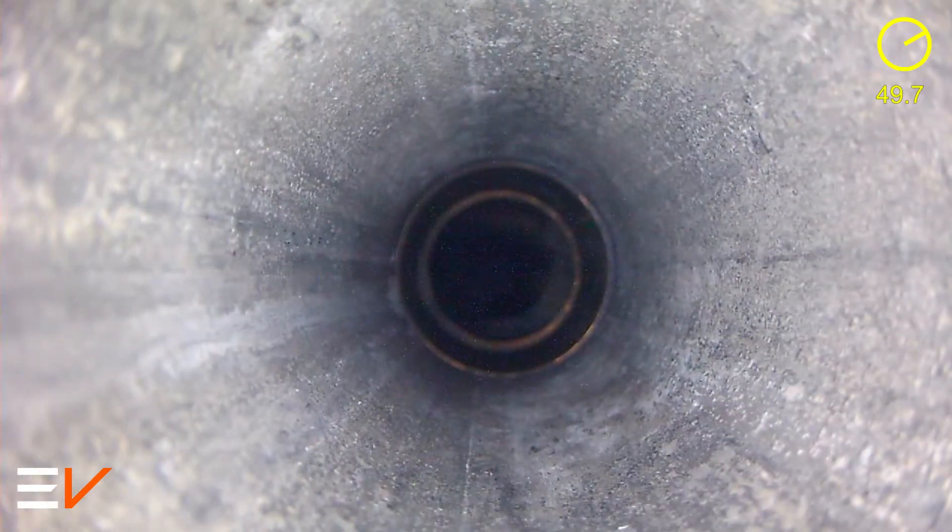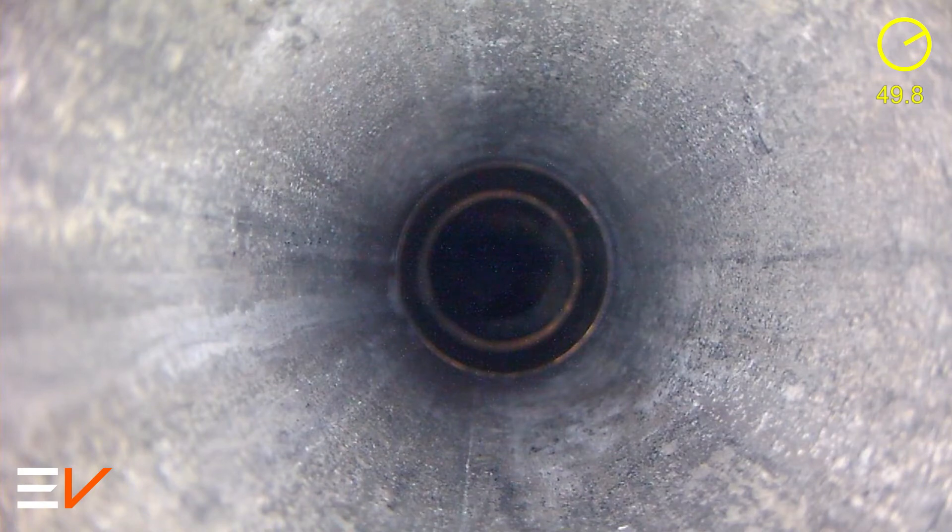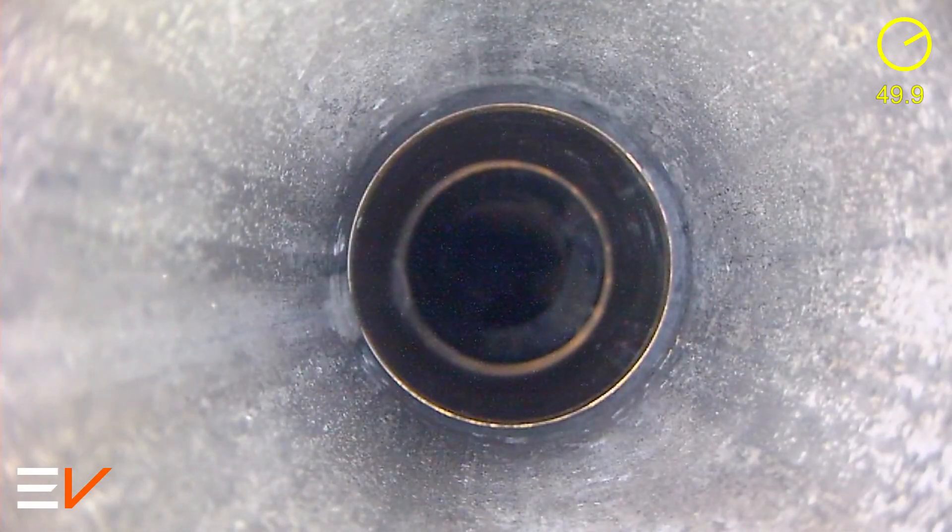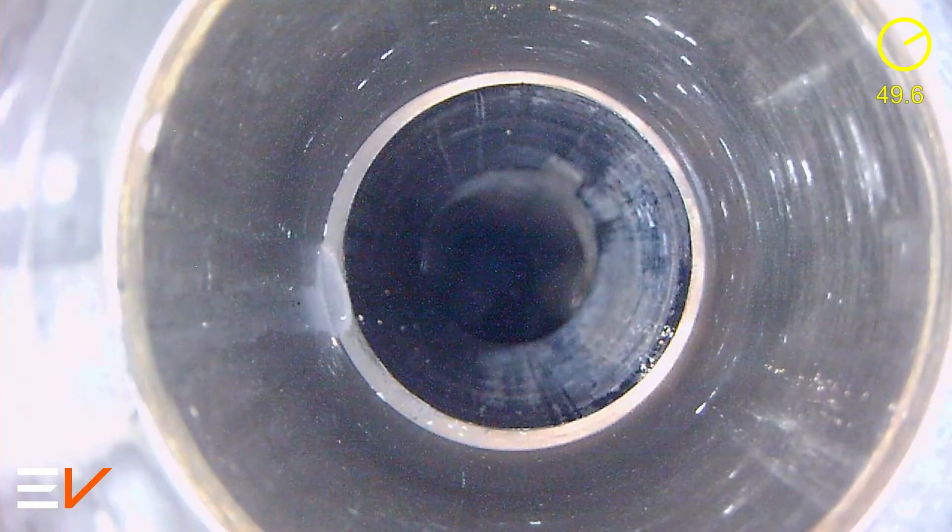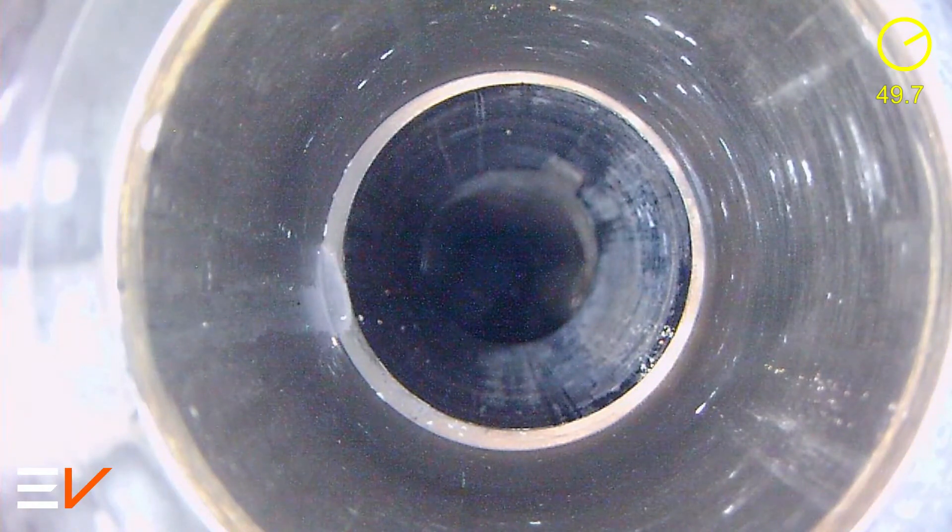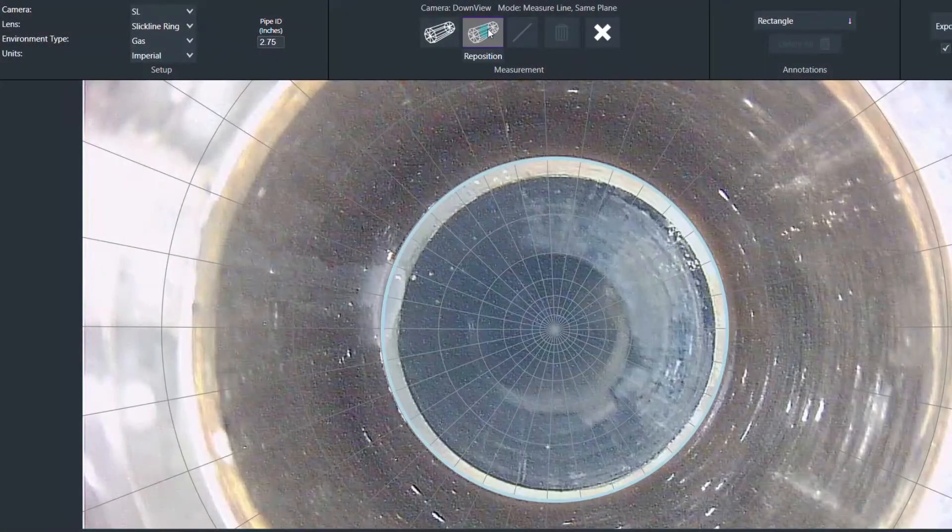The high-definition footage from the down view camera revealed two holdup events located within the same side pocket mandrel. The first issue was found to be an unexpected change in diameter in the upper part of the assembly. Impact marks on the low side of the wellbore indicate where the drift tools have contacted the restriction.